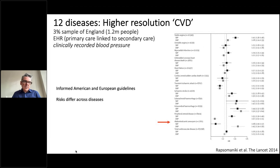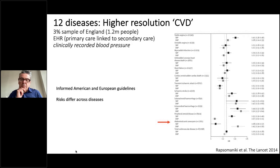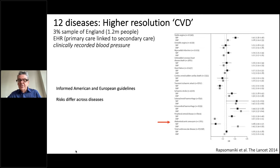Moving on to 12 diseases: can we unpack cardiovascular disease? In a sample from England, instead of treating cardiovascular disease as a lump, we split it into 12 different cardiovascular diseases and looked at the influence of systolic and diastolic blood pressure on those events. The risks differed profoundly across diseases. For example, for abdominal aortic aneurysm, there's a discordance between systolic and diastolic effects — actually going in opposite directions compared to peripheral arterial disease above it. Many of those diseases differ substantially from the pooled effect. This also informed lower thresholds for diagnosing hypertension.